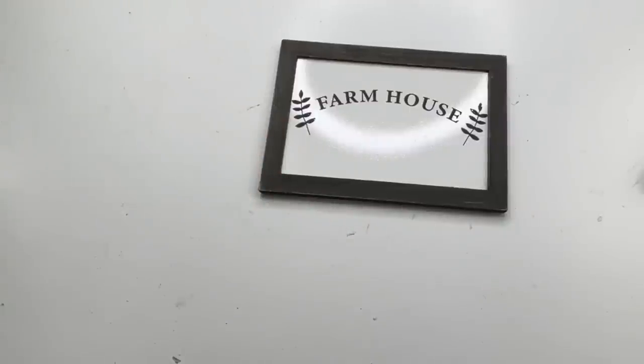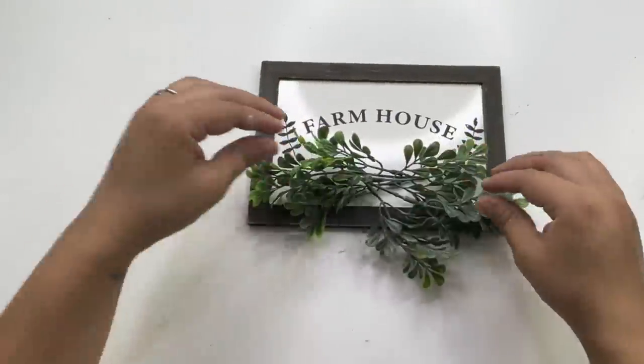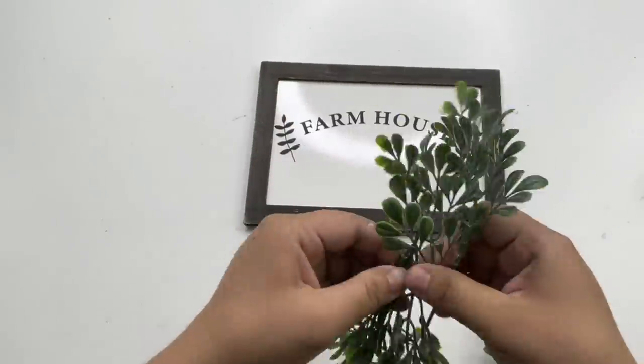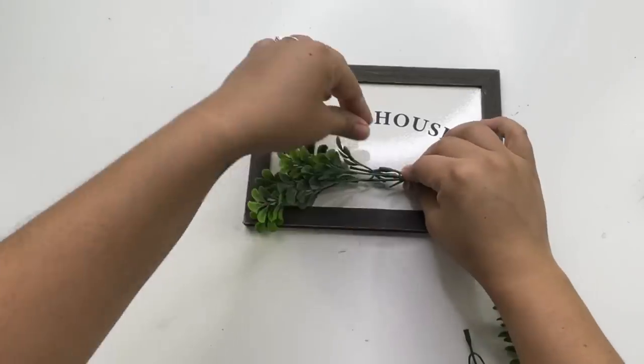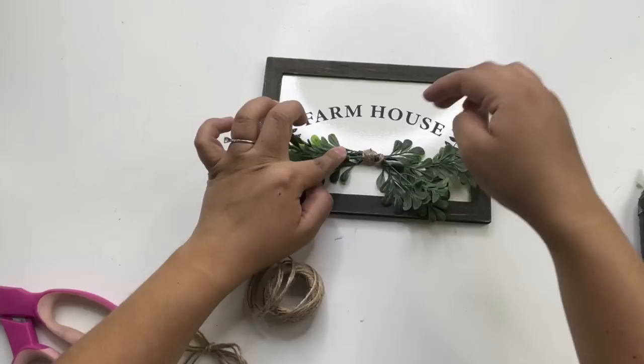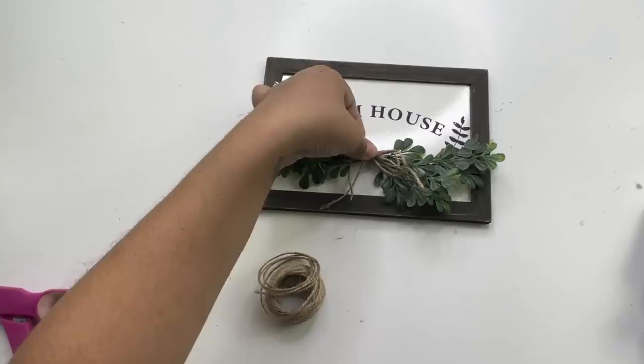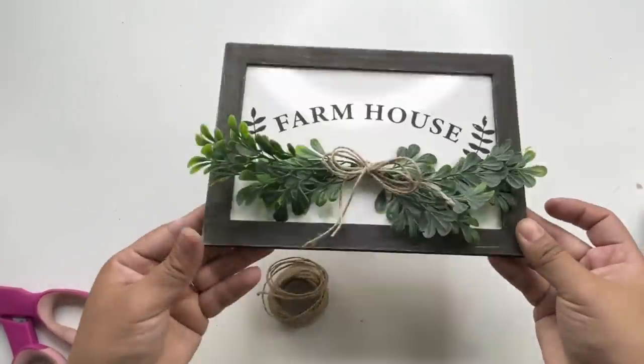Or you can add some greenery, which I'm using these eucalyptus, no boxwood greenery, that I got from Walmart. I cut two stems up, tied them in the center with jute twine, and then glued them to the sign. And to cover the jute twine I added a bow. And that is it for this farmhouse sign.